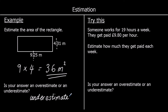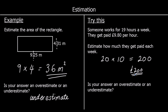Someone works for 19 hours a week and gets paid £9.80 per hour. Estimate their weekly pay. 19 hours rounds to 20, and £9.80 rounds to £10. So 20 × £10 = £200 per week. Is this an overestimate or underestimate? We rounded 19 up to 20 and £9.80 up to £10 — we've overestimated. The actual answer will be lower than £200.